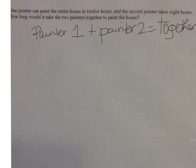So the 12 hours for painter 1, I want to represent how much he could get done in 1 hour. So to represent how much he gets done in 1 hour, so the entire house is 12 hours. How much does he get done in 1 hour? So that's 1 over 12 plus. The second painter, he takes 8 hours to do the entire house. So how much does he get done in 1 hour? So I do 1 over 8 is equal to.